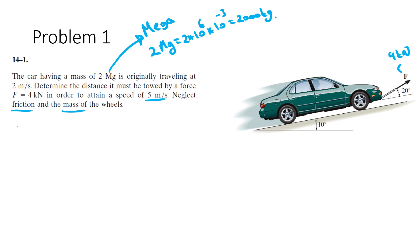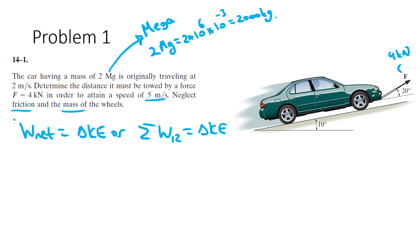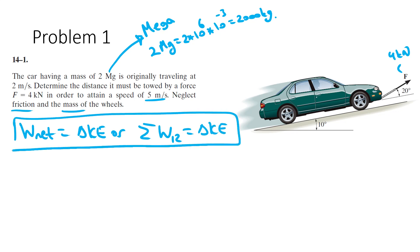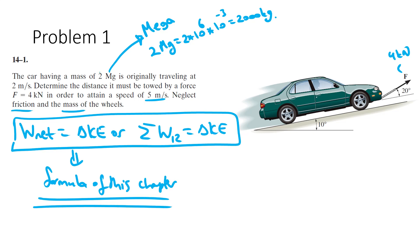This is an application of the work and energy principle. The formula is: work net equals the change in kinetic energy, or the total work from point 1 to point 2 equals the change in kinetic energy. If you know this formula, you will find this chapter very easy. Let's start by finding the kinetic energy at point 1 and at point 2, then we'll handle the left-hand side.